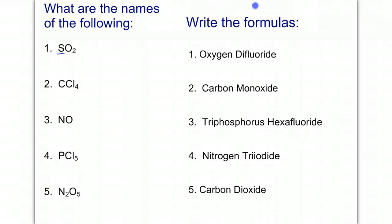Okay, number one, we have one sulfur. So that's one sulfur, and we have two oxygens. So that's going to be called sulfur dioxide.